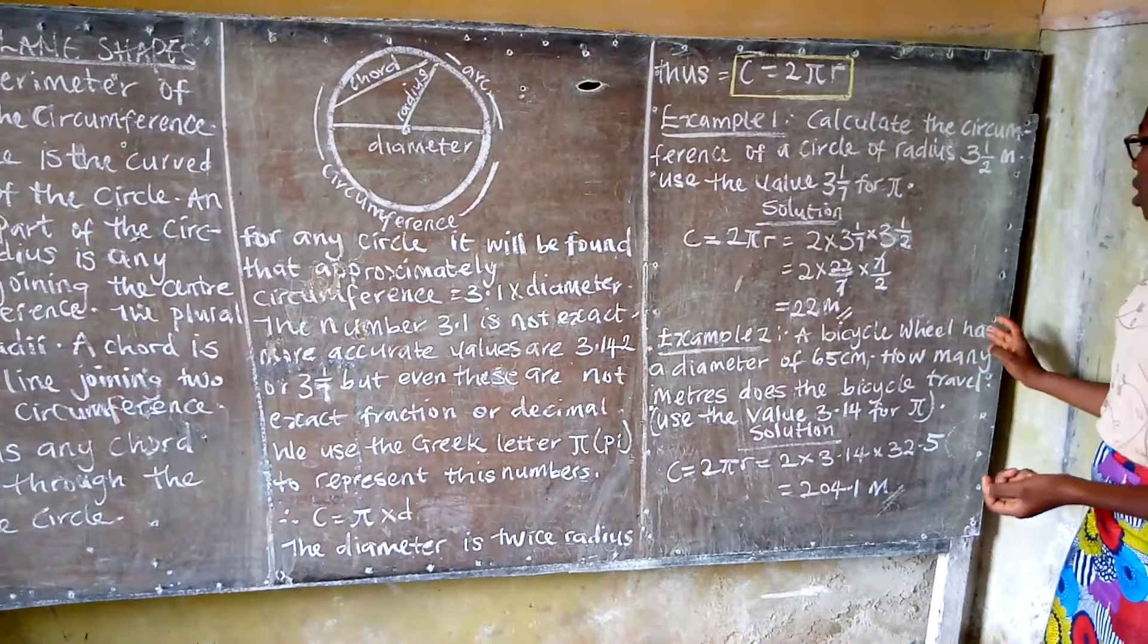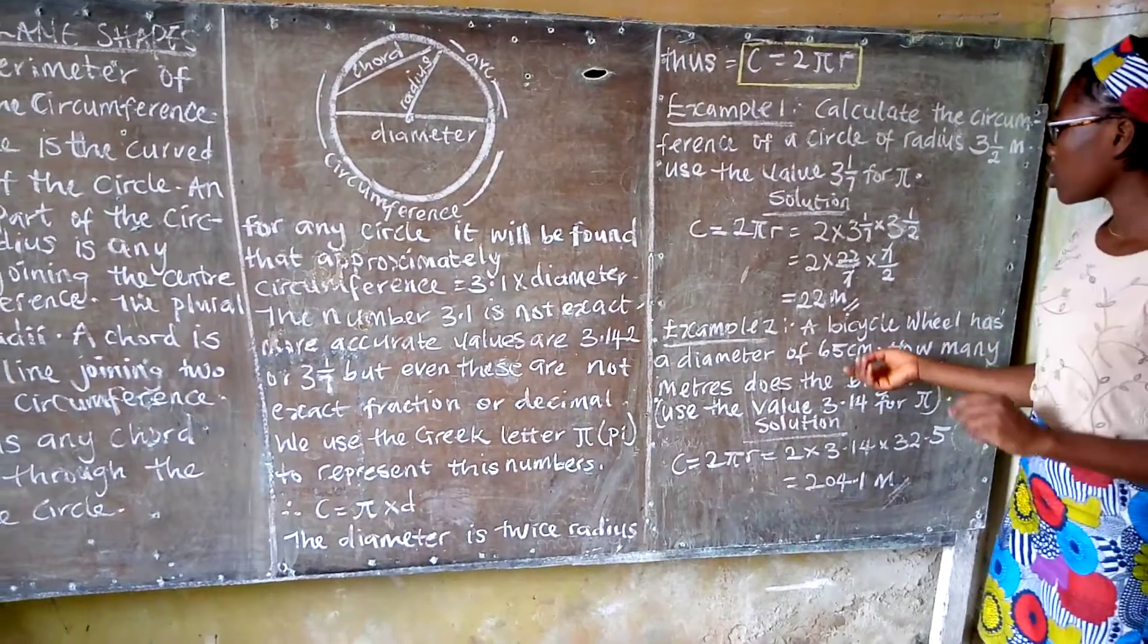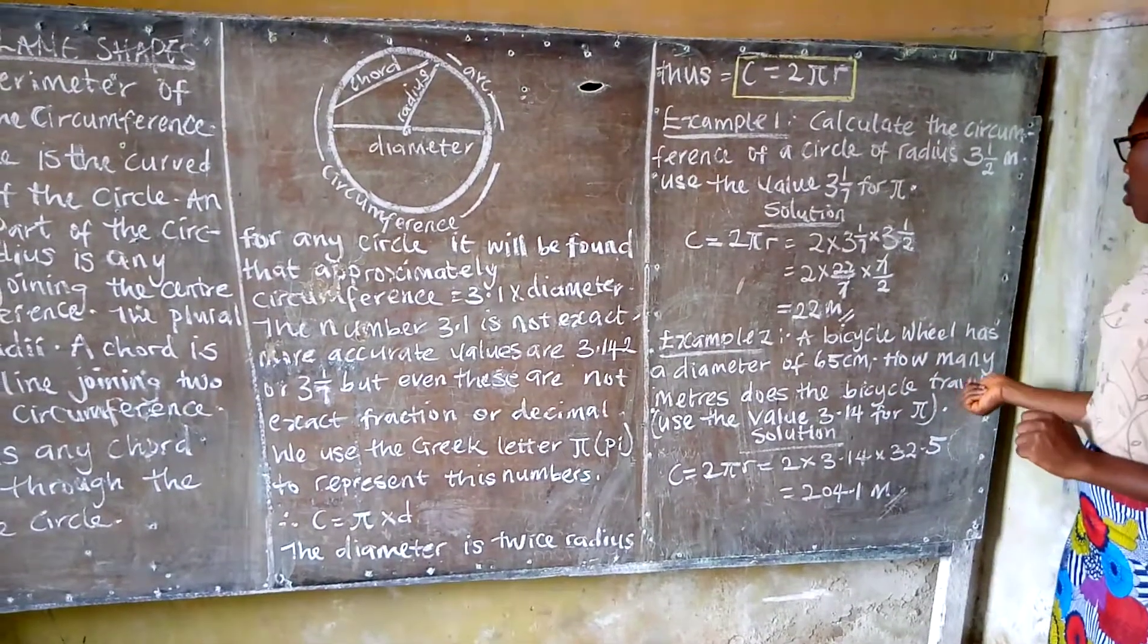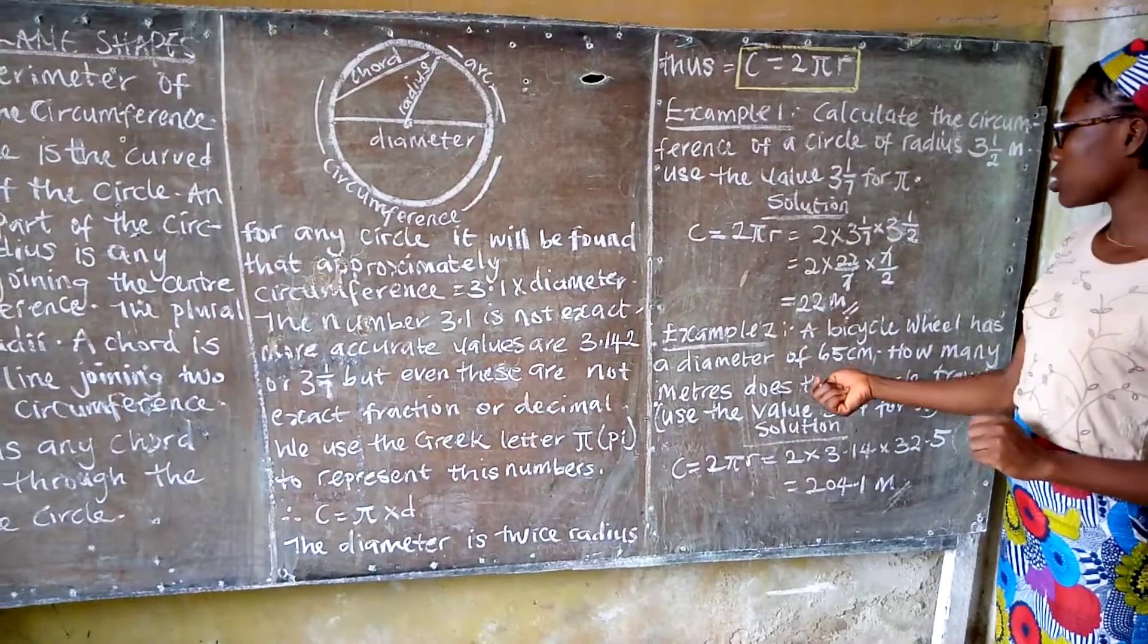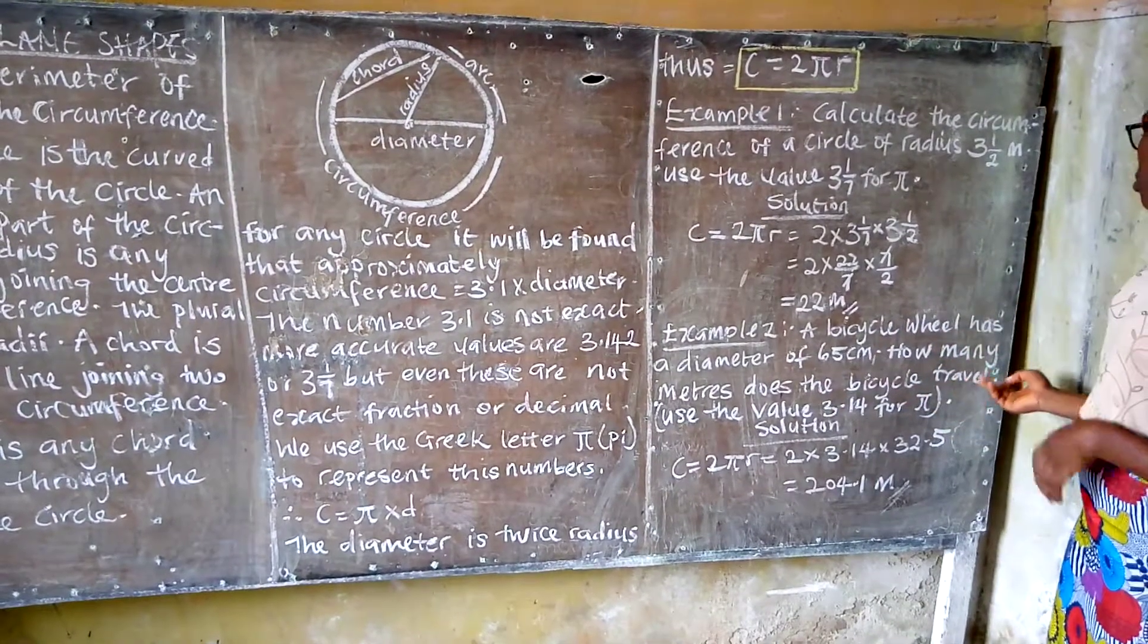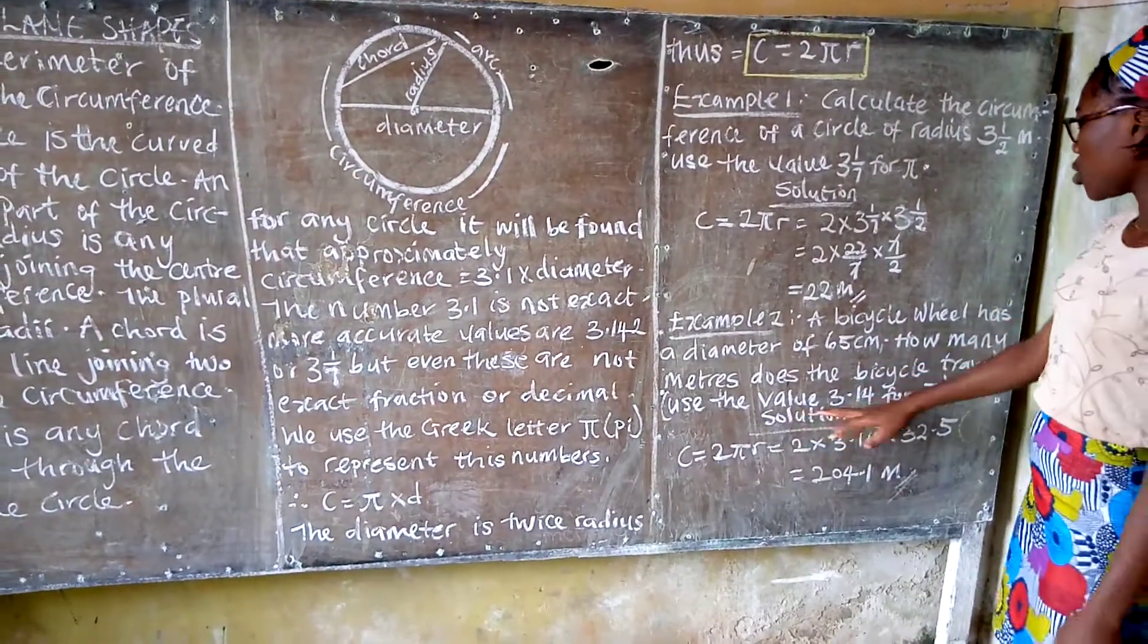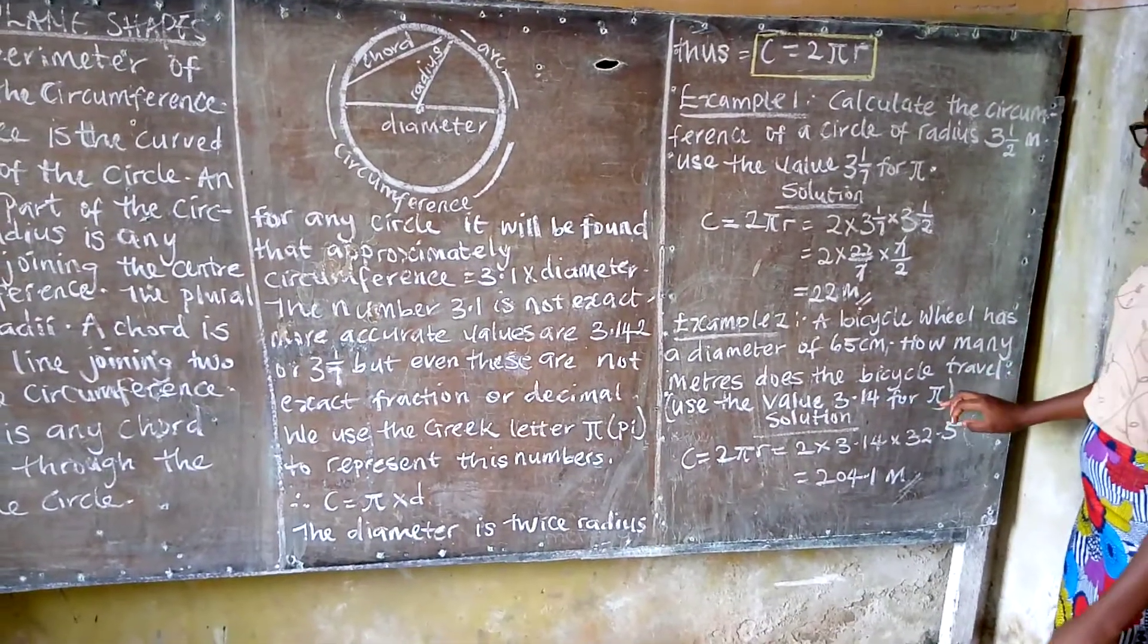Example 2: A bicycle wheel has a diameter of 65 centimeters. How many centimeters does the bicycle travel? Use the value 3.14 for π.